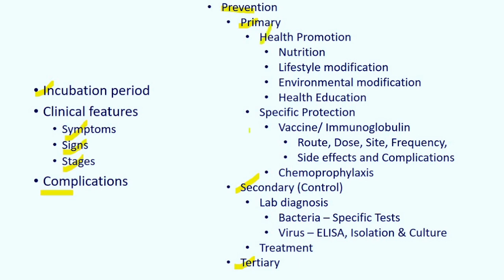Out of primary prevention, we have health promotion and specific protection. For all diseases we can answer: nutrition, lifestyle modifications, environmental modification, and health education under health promotion. Under specific protection, we talk about the vaccine and any immunoglobulin present. Under vaccine, we talk about route, dose, site, and frequency. National immunization schedule under the Universal Immunization Program, side effects, complications from vaccination, and chemoprophylaxis to prevent the disease.